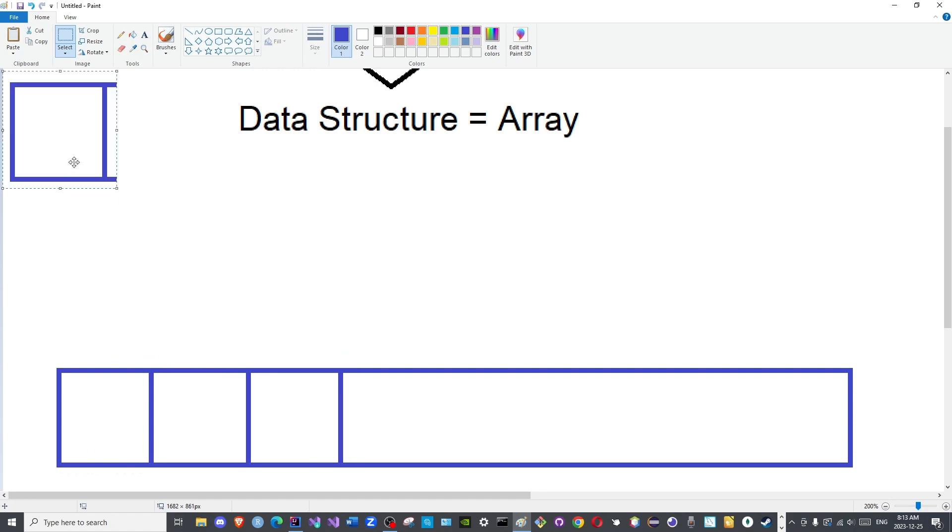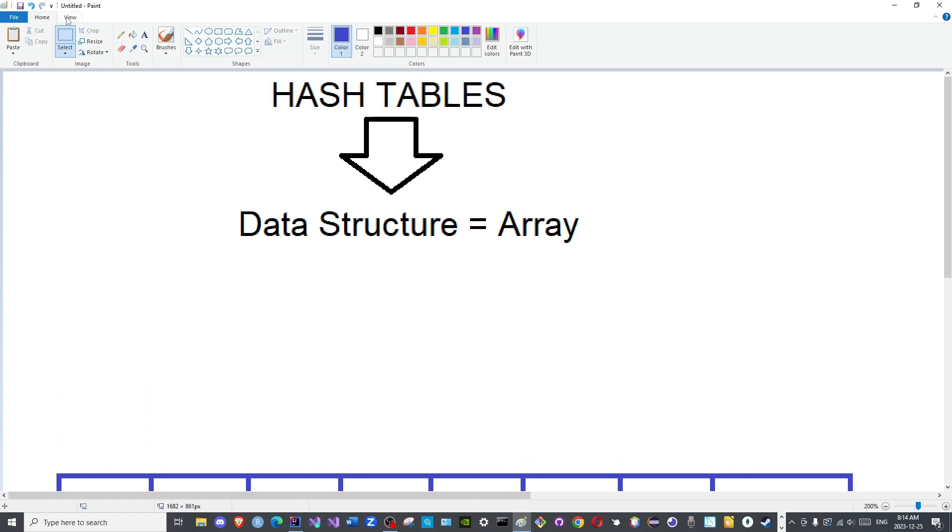I will just finish creating this array quickly before we begin the lecture. A hash table as we mentioned is a data structure but it is a data structure that uses another data structure. Its foundation is not a hash table, its foundation is actually an array, a one-dimensional array to be exact.